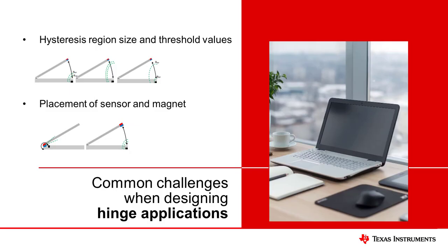A common design challenge for hinged applications is choosing threshold values and hysteresis region sizes for your system's requirements. Hysteresis helps eliminate sporadic state changes that would be caused by fluctuations in the supply, electrical noise, magnetic noise, and mechanical vibration.